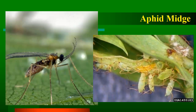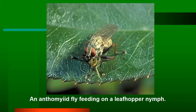Here's a midge species — midges are a type of fly. In amongst those aphids on the right-hand side, you see a bit of an orange streak — that's the maggot of that midge species. So there are a lot of flies that are predators of aphids.